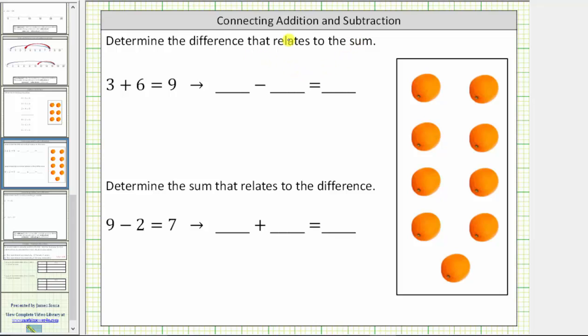In this video, we will make the connection between addition and subtraction of whole numbers. In this first problem, we're asked to determine the difference that relates to the sum. And the given sum is three plus six equals nine.